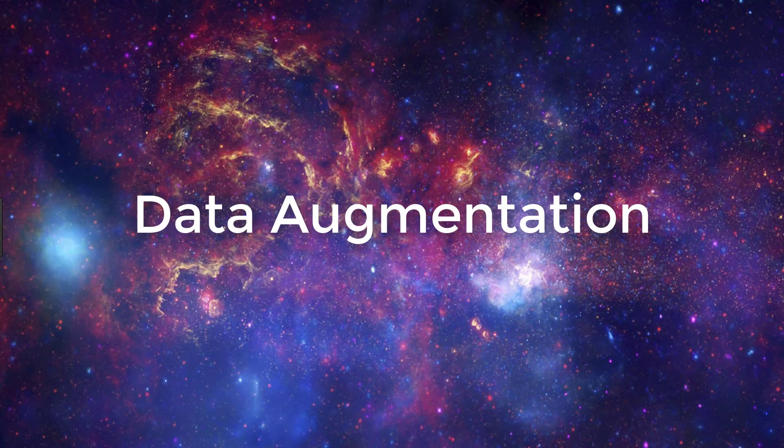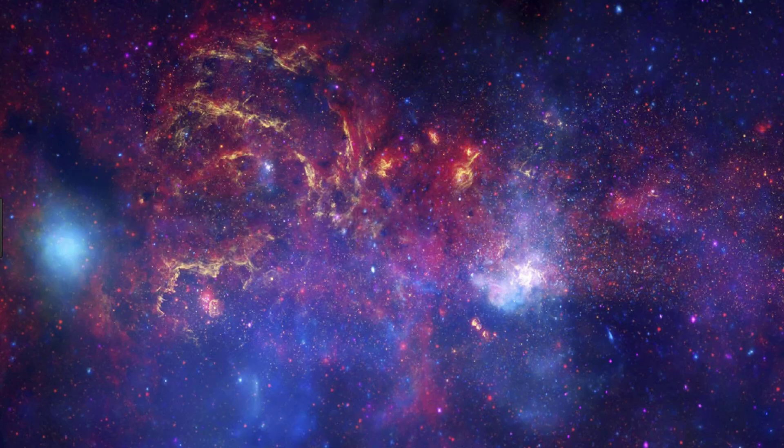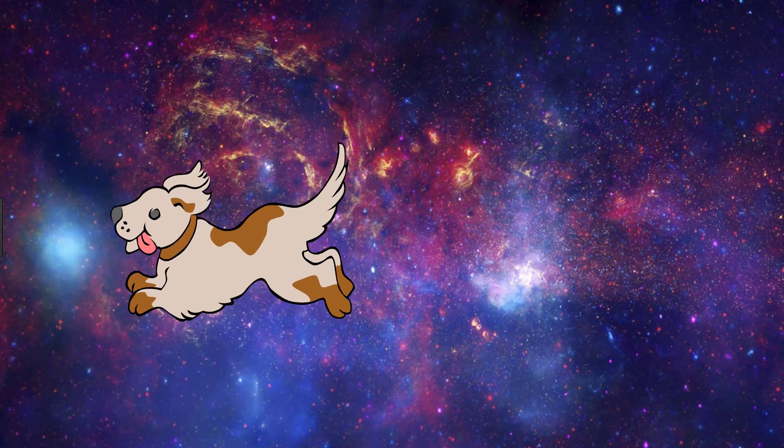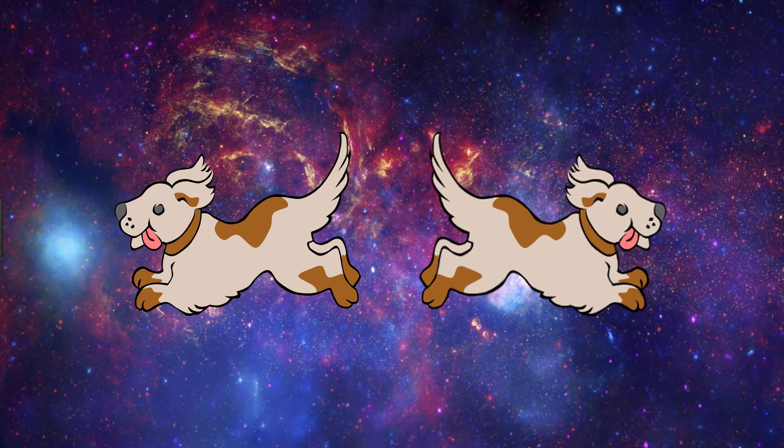The general idea of data augmentation allows us to add more data to our training set that's similar to the data that we already have, but is just reasonably modified to some degree so that it's not the exact same. For example, if most of our dog images were dogs facing to the left, then it would be a reasonable modification to add augmented, flipped images so that our training set would also have dogs that face to the right.